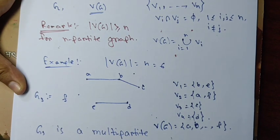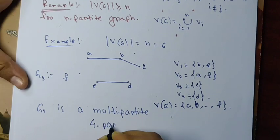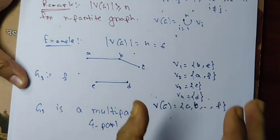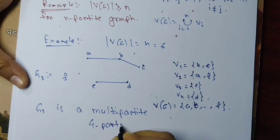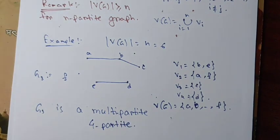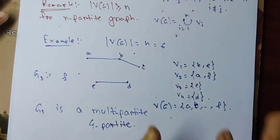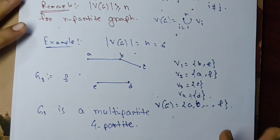Specifically, this graph G3 is a four-partite graph, because we have four parts for the vertex set. Note that this partition is not unique — we could find other valid partitions, and the graph could also be described as a five-partite or six-partite graph.